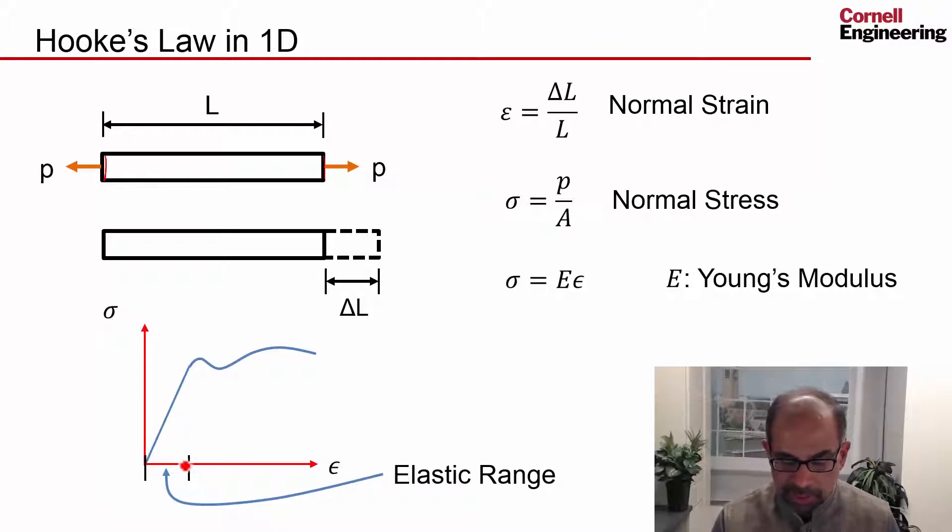And this is valid only in the so-called elastic range. So if I do this in the lab and I apply different stresses, I keep increasing P and correspondingly sigma and plot, figure out what the corresponding strain is. So I plot strain versus stress. Initially I'll get a linear variation, which is what this gives me. And then I'll get yield and then I'll get nonlinear variation. So this is valid only in the linear range.